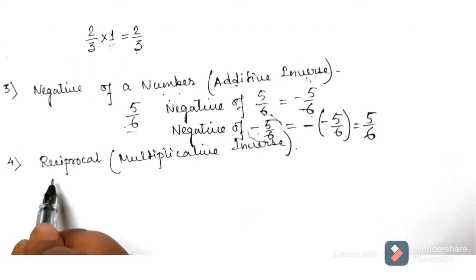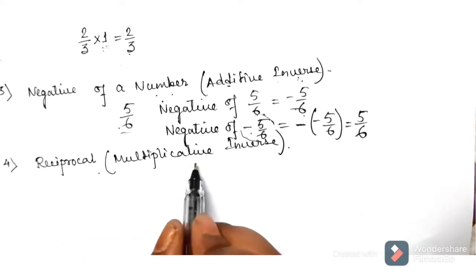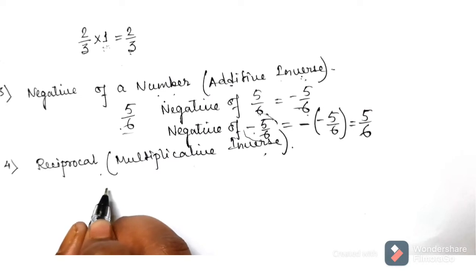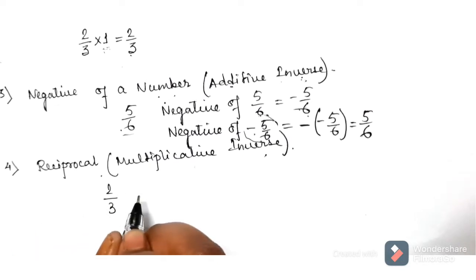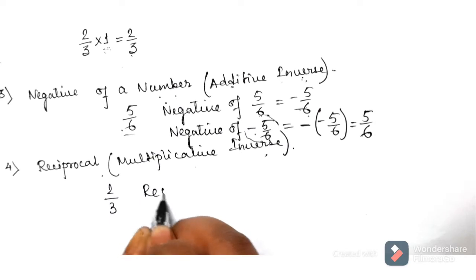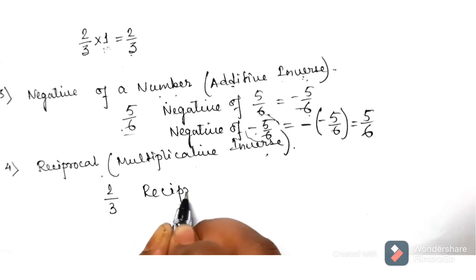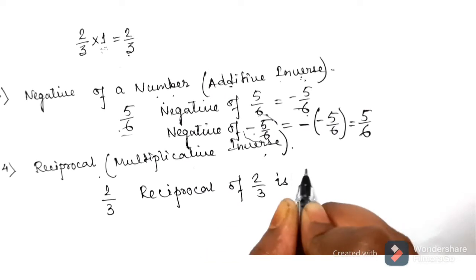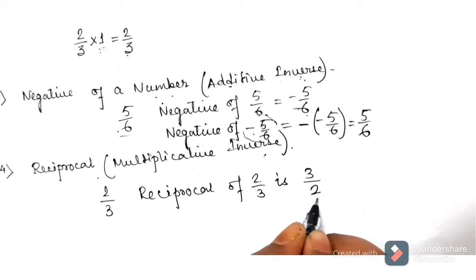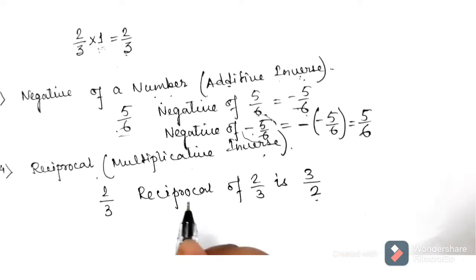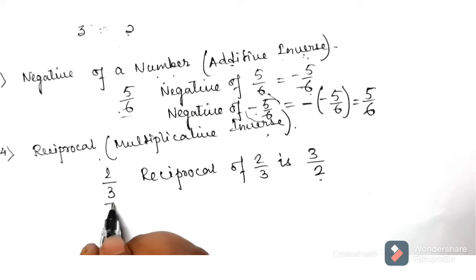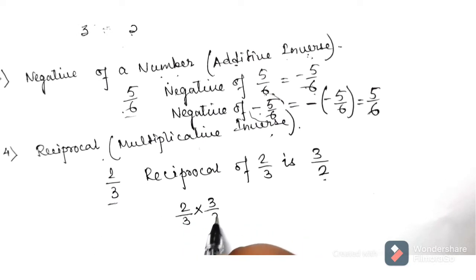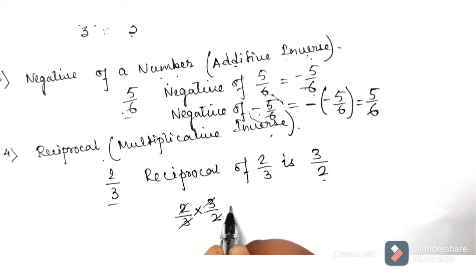The last point: we have the reciprocal, or what we can call the multiplicative inverse. If I take 2 by 3, what will be the reciprocal of 2 by 3? The reciprocal of 2 by 3 is 3 by 2. This is called the multiplicative inverse. If you multiply 2 by 3 with its multiplicative inverse 3 by 2, we get 1.